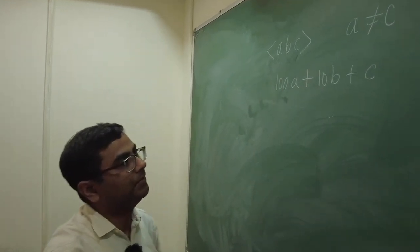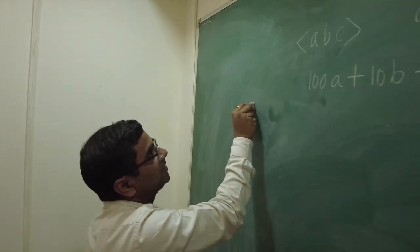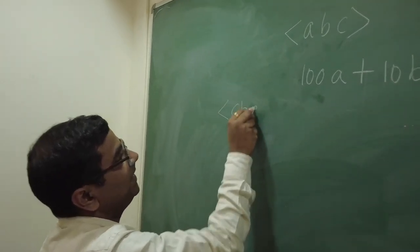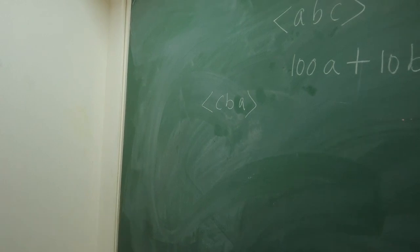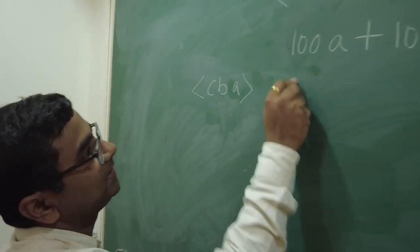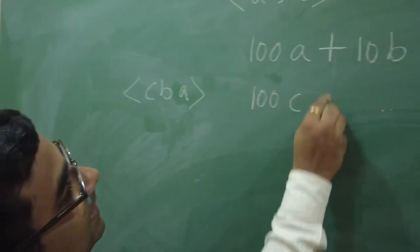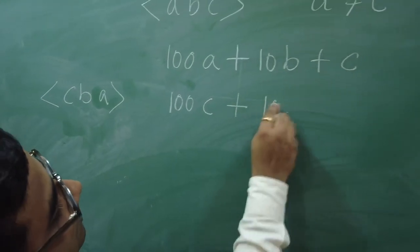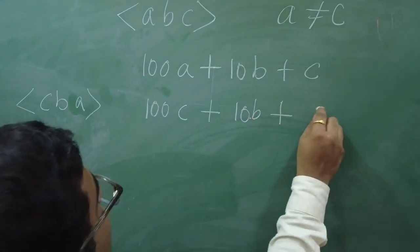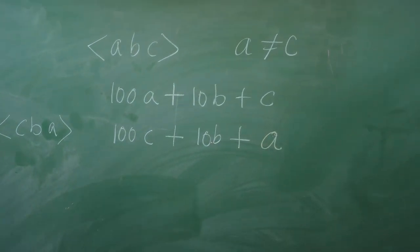Now, what was the second step? We had to reverse this number. So, the reverse number would be CBA. Reverse as in when we reverse the order of the digits. Then, the number is 100C plus 10B plus A. Isn't it?